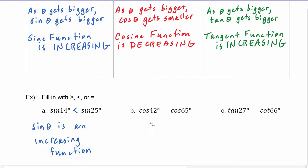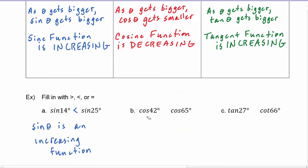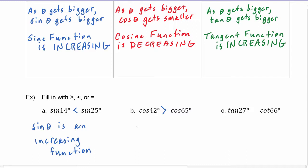Next, we compare cosine of 42 degrees to cosine of 65 degrees. We just learned that as the angle gets bigger, the cosine gets smaller, so the bigger angle has the smaller cosine. The smaller angle will have the bigger cosine, so we put a greater than sign: cosine of 42 is greater than cosine of 65, because cosine of theta is a decreasing function.